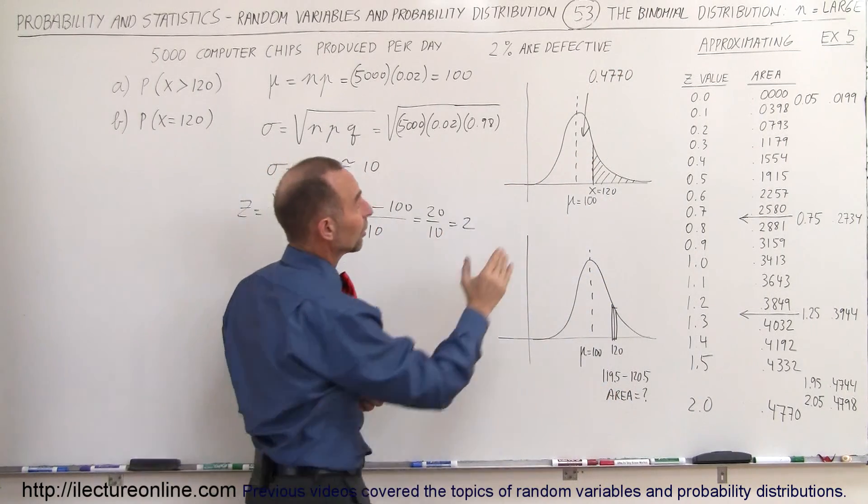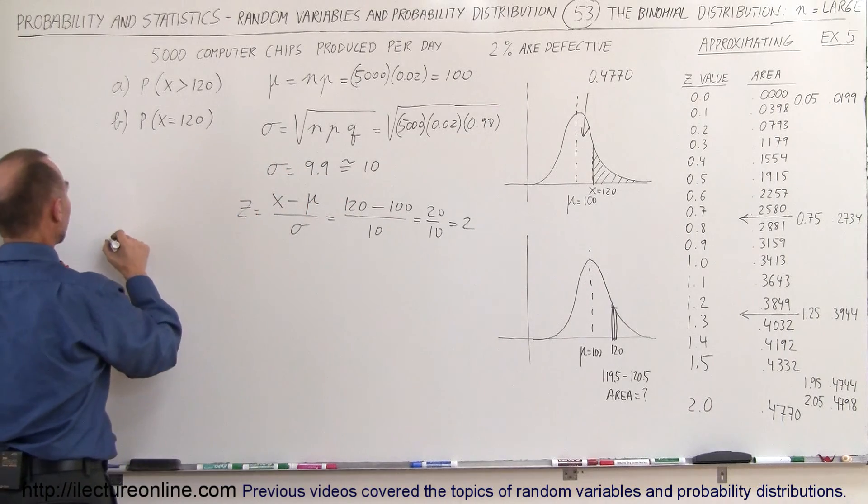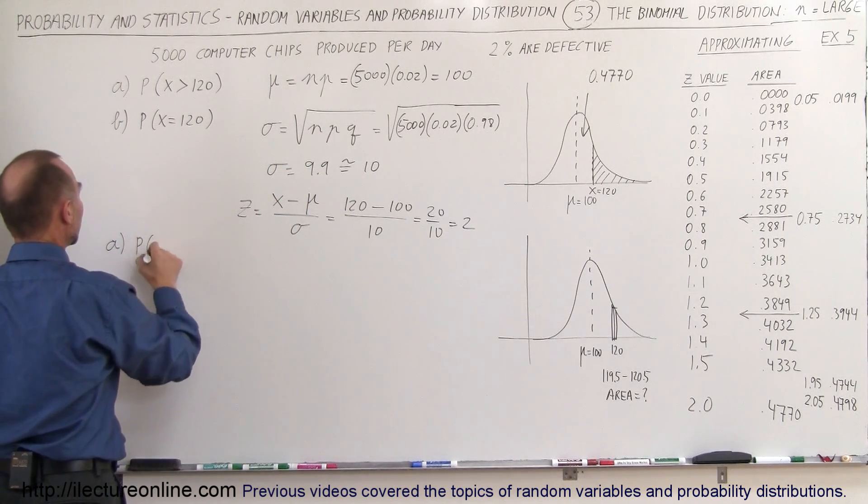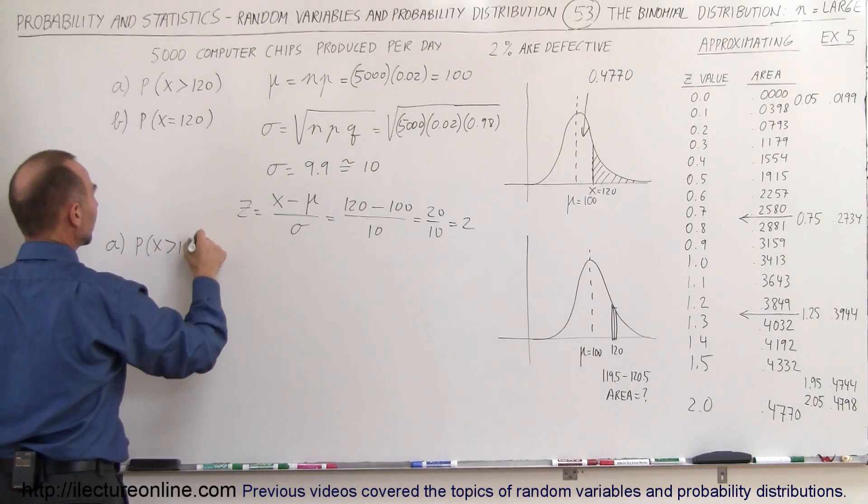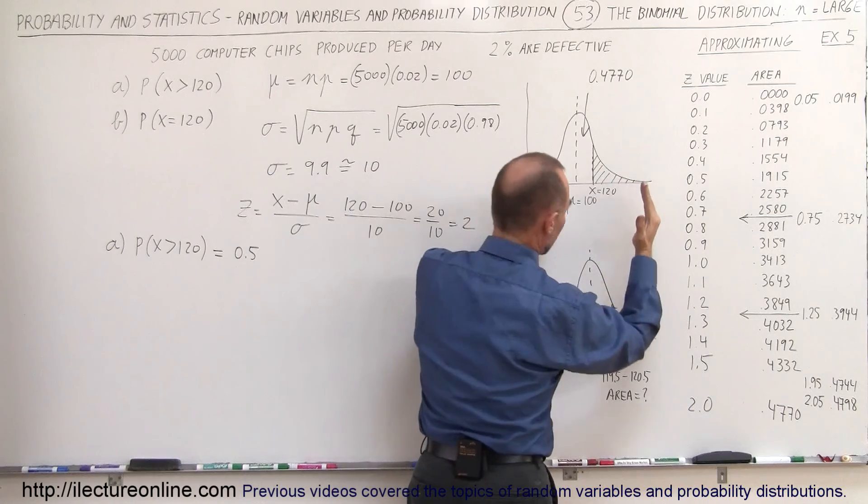That means that this area right here would be equal to this value, which is 0.4770. But we don't want this area, we want the area beyond that. So that means the probability for part A, that X is greater than 120, is equal to 0.5, which is this entire area right here,